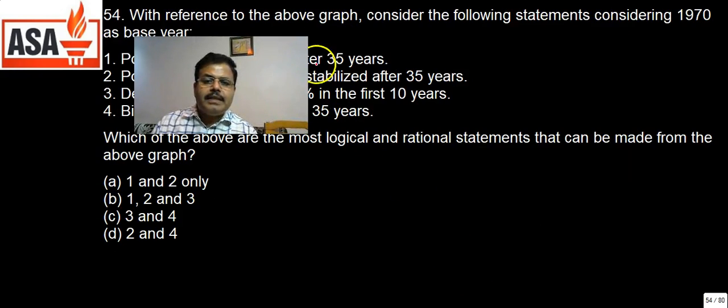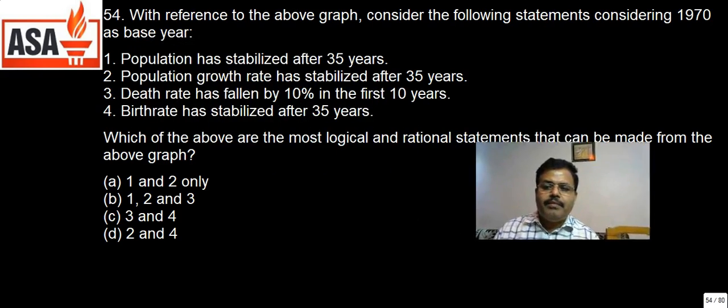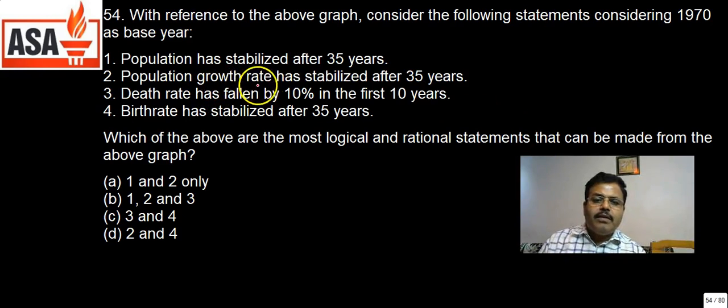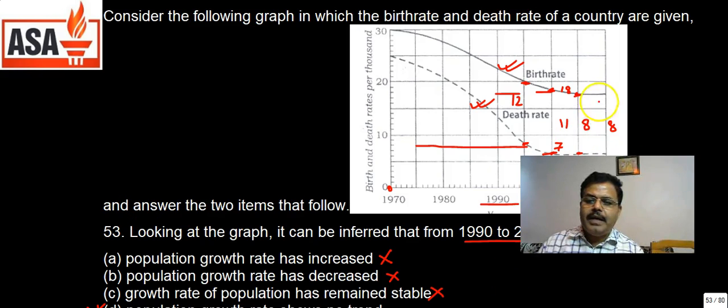Population has stabilized after 35 years - still population is going to increase but not with a faster rate. Statement 2: Population growth has stabilized after 35 years. Yes, this is correct because this one is 8 and thereafter it is 8. So growth is stabilized because the gap is 8-8-8.